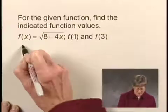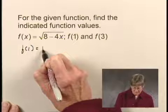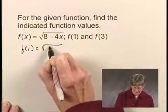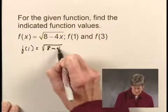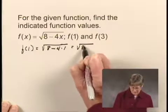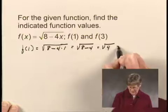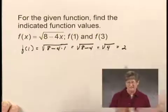Let's start with f(1), and we'll substitute 1 for x. So we have f(1) = √(8 - 4×1), which is √(8 - 4), or √4, and that's equal to 2. So f(1) = 2.